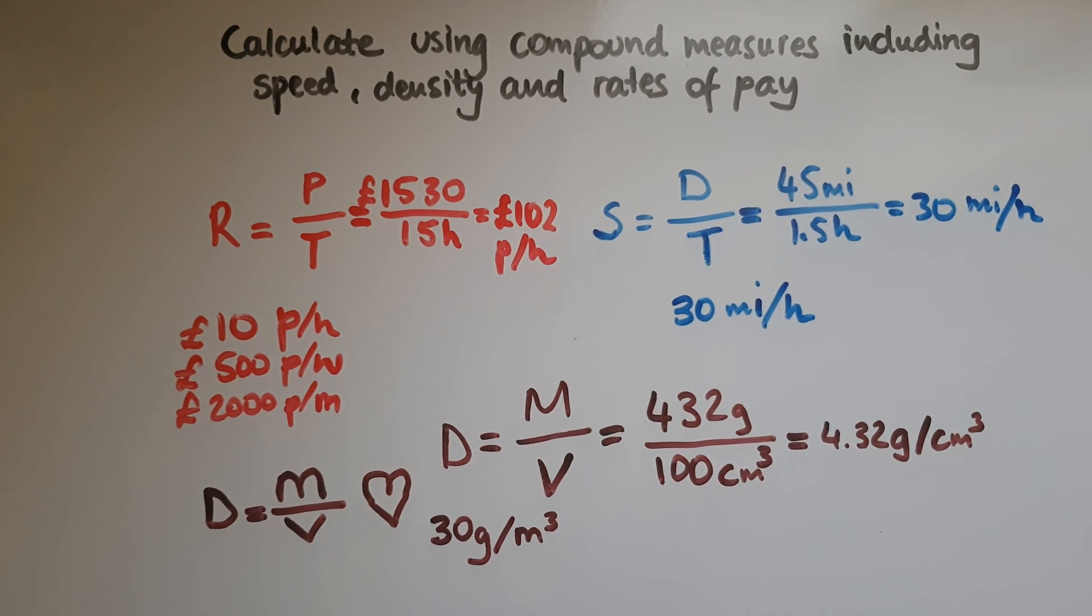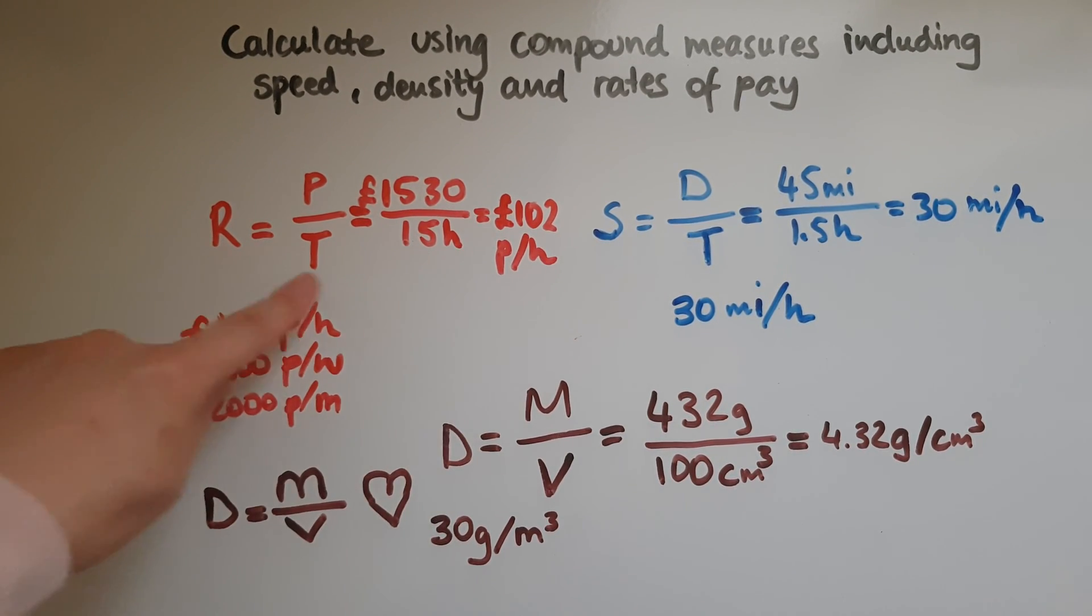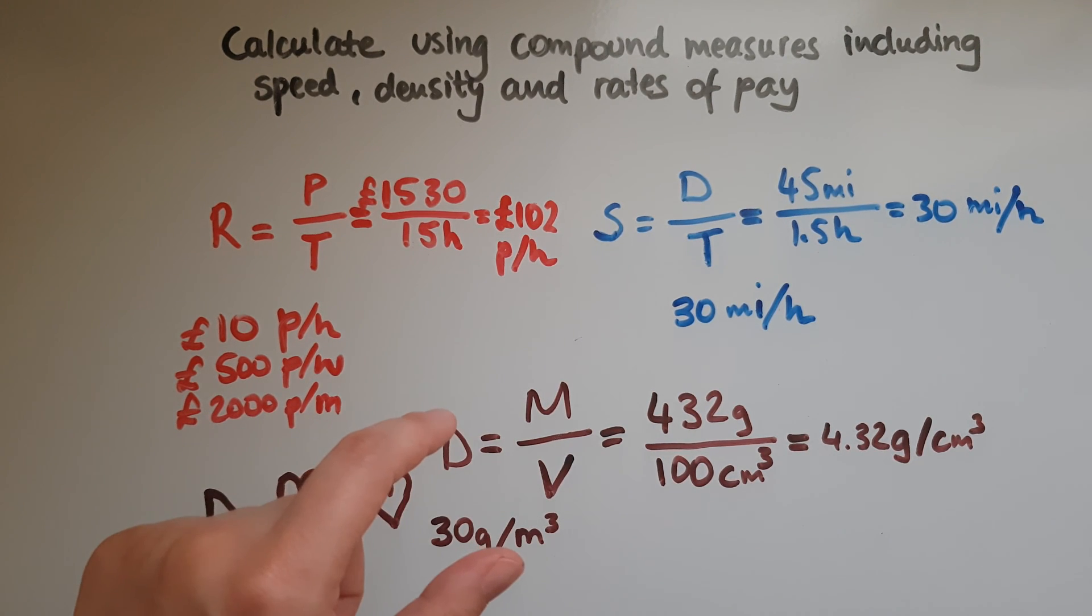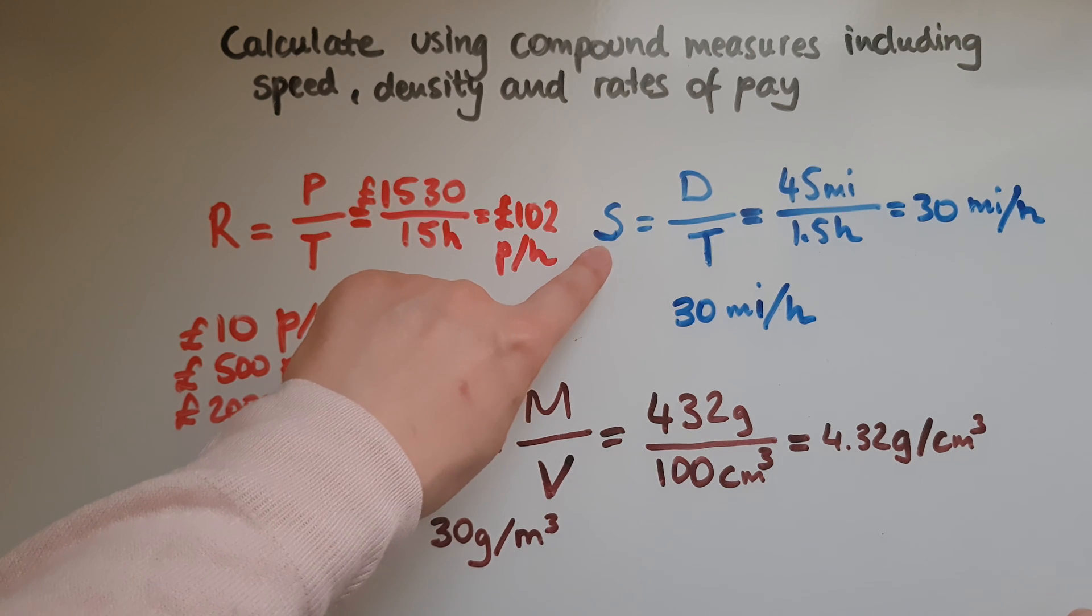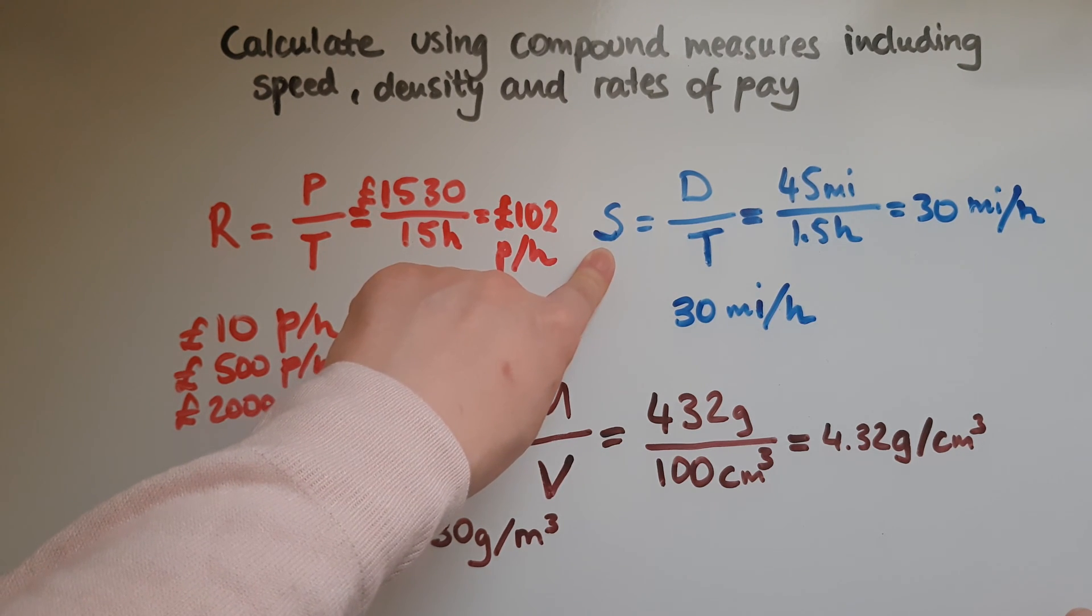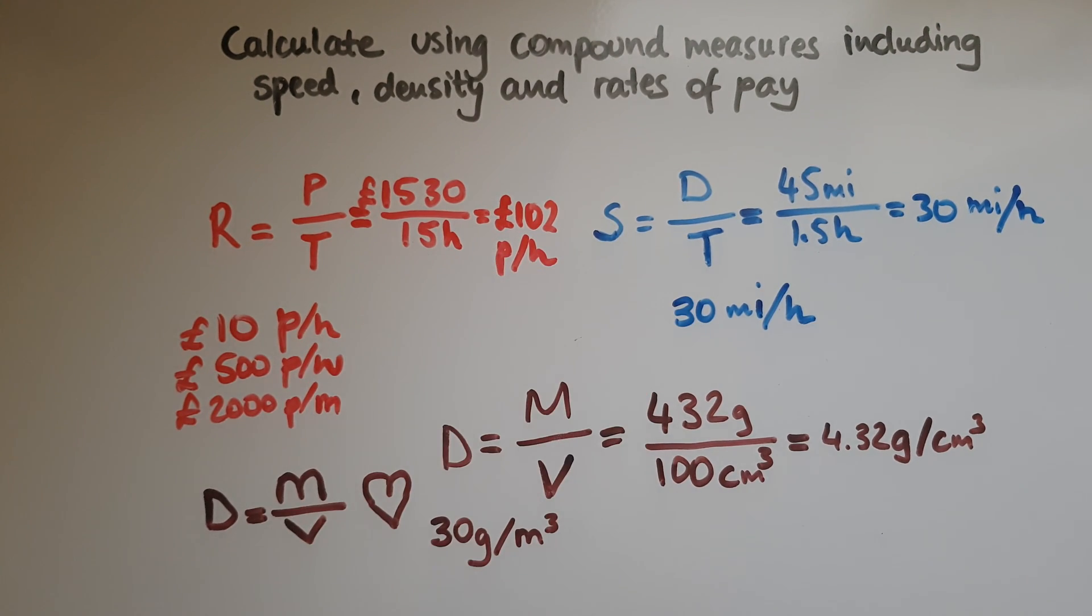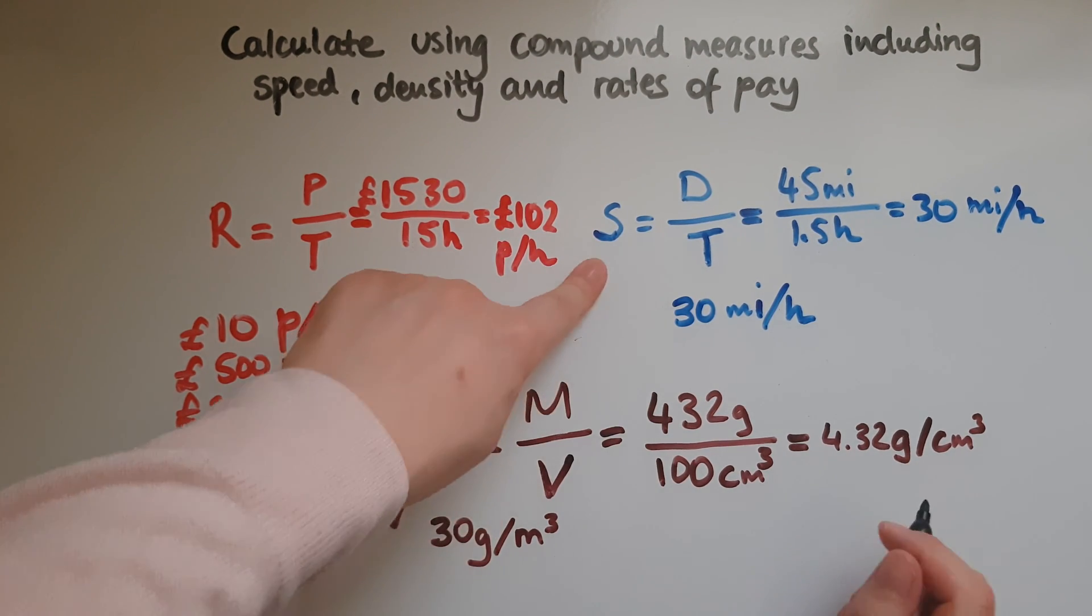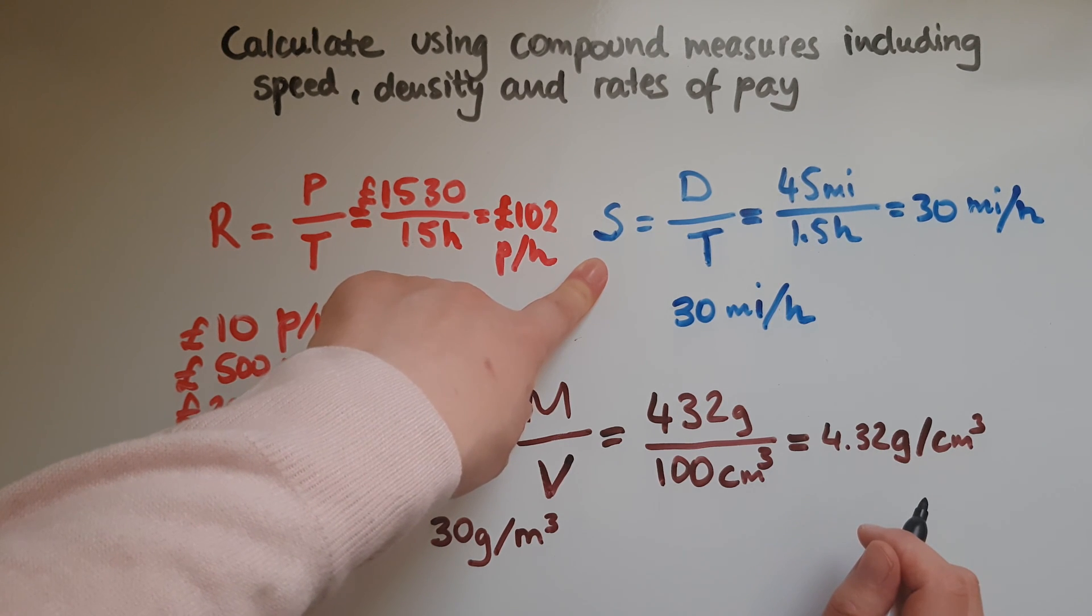One last thing that I want to discuss here is that sometimes, although you might know the formula, it might be a bit trickier to work out one of the answers. The reason being is that sometimes instead of being asked to work out the speed, you may be asked to work out the distance or time. So let's illustrate, for example, let's say you've been given that the speed that the car is travelling at is 30 miles per hour.